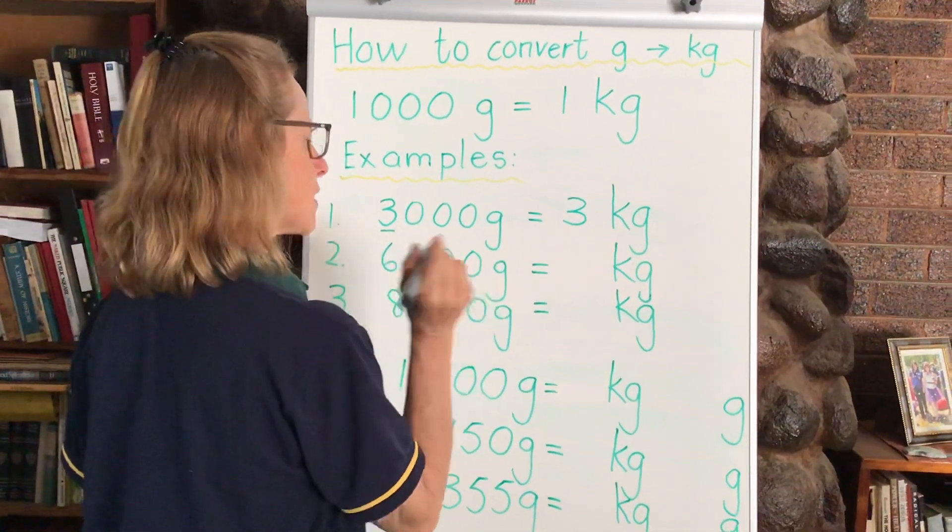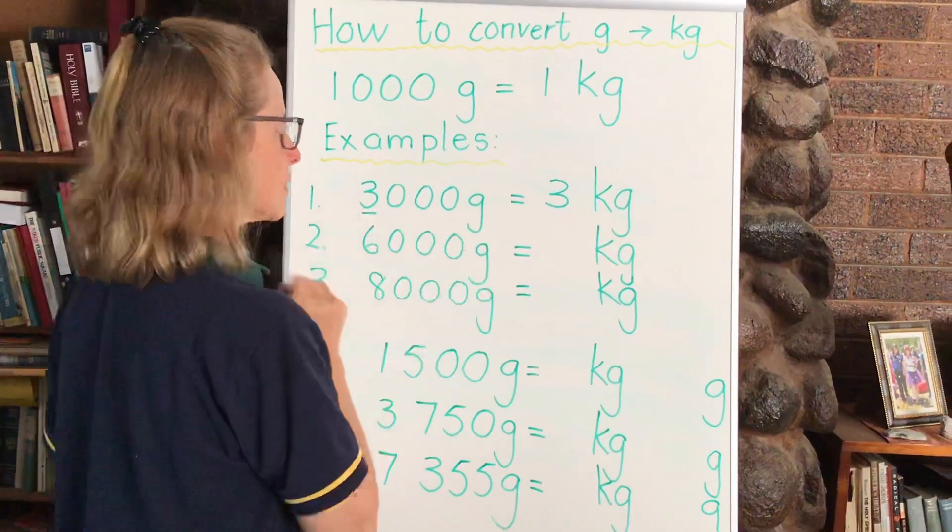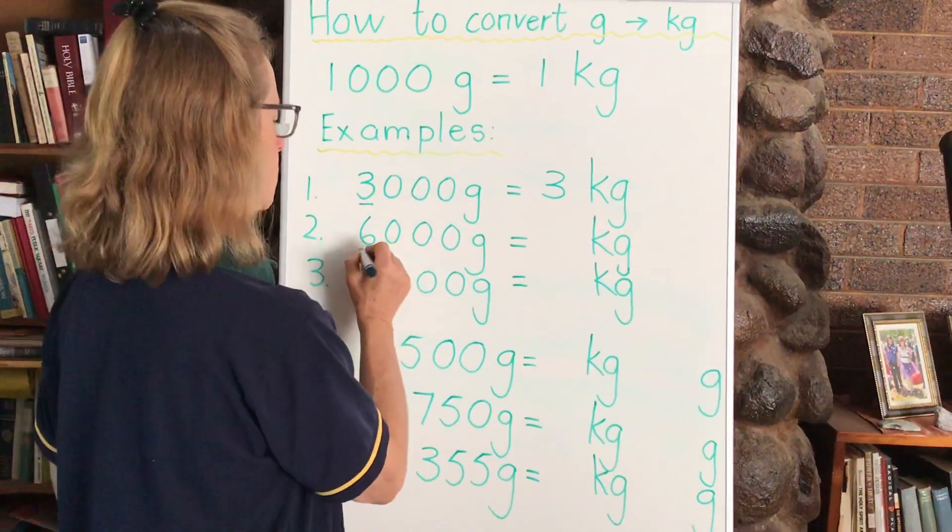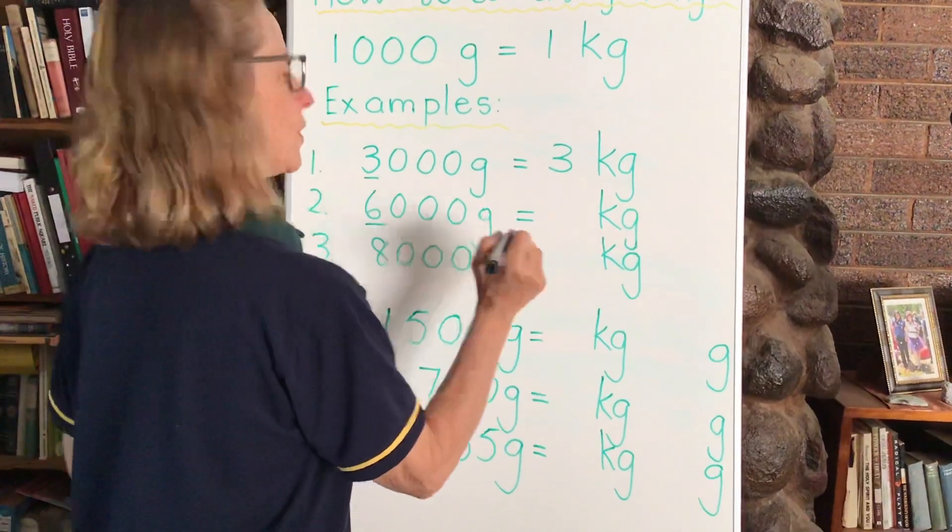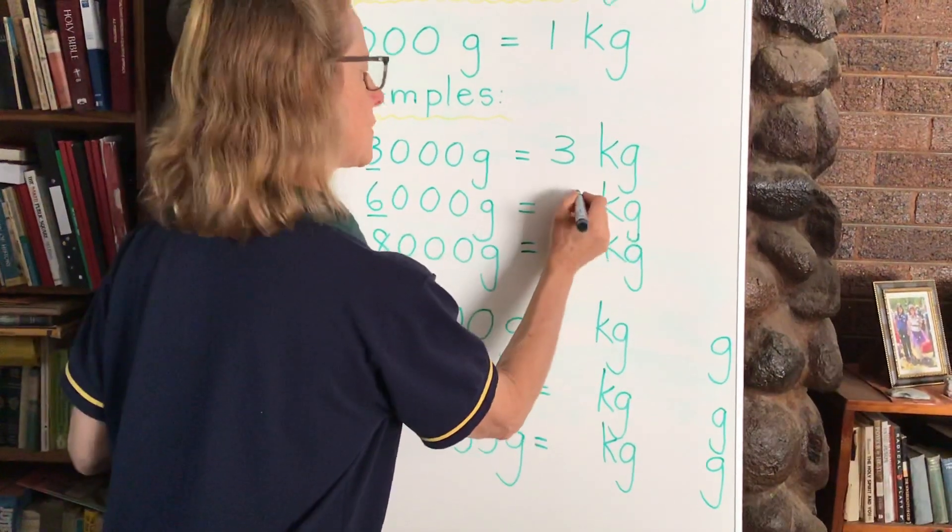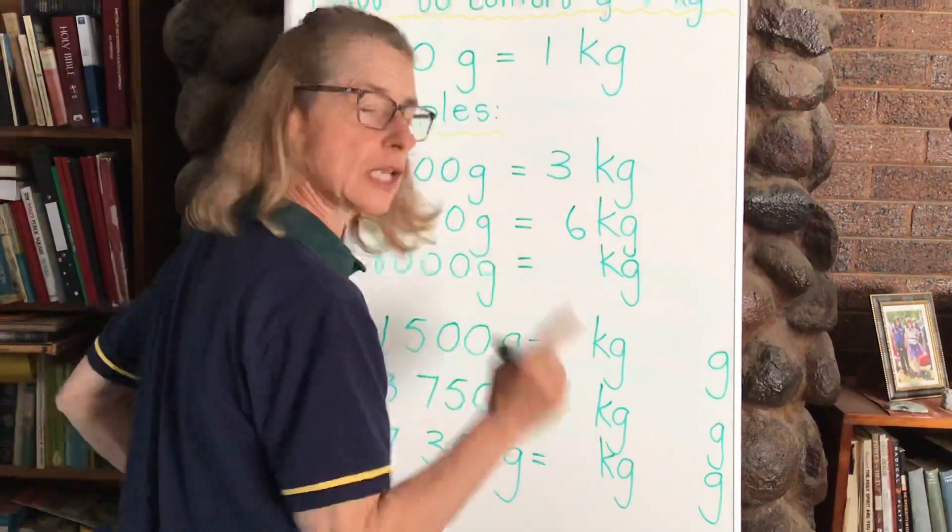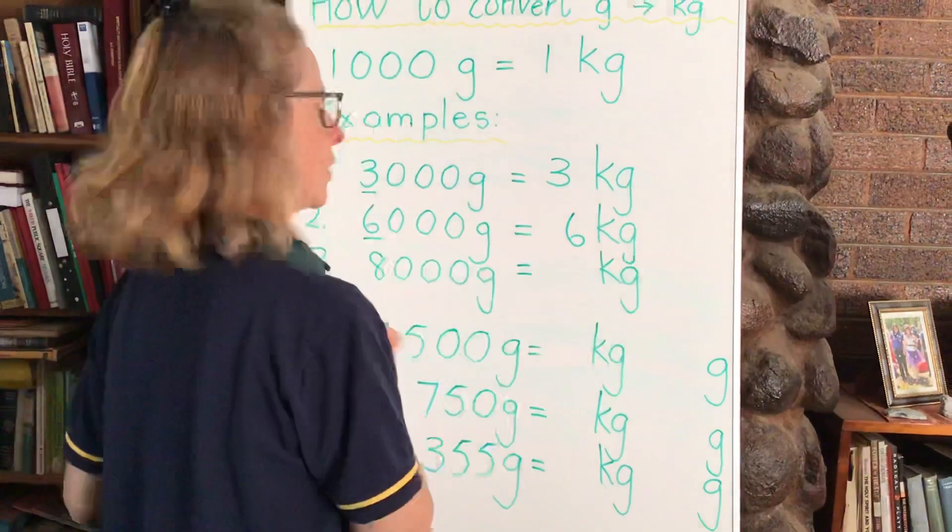Now when we come to 6,000 grams, how many thousands do we have? That's right, we have 6,000 so that means that we are going to convert that to 6 kilograms. There will be 6 kilograms in the 6,000 grams.